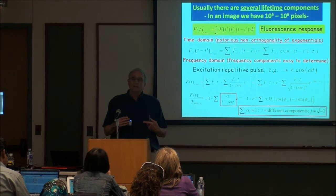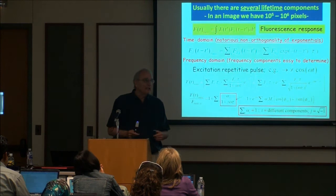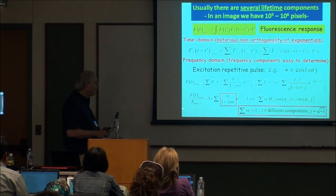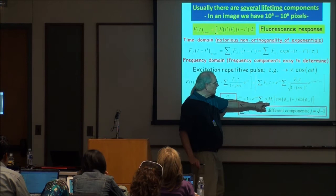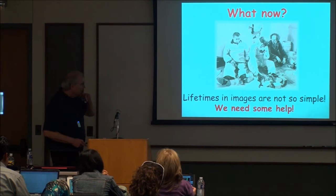Even in cuvette measurements, if you want to distinguish between two lifetimes of say 2.5 and 3 nanoseconds, you might need 100,000 photons to do that — and you just don't get anywhere near that in a microscope. The frequency domain has the same issue. We get all sorts of signals: the modulation from a particular component, the in-phase, and the out-of-phase component because we're getting a phase lag.